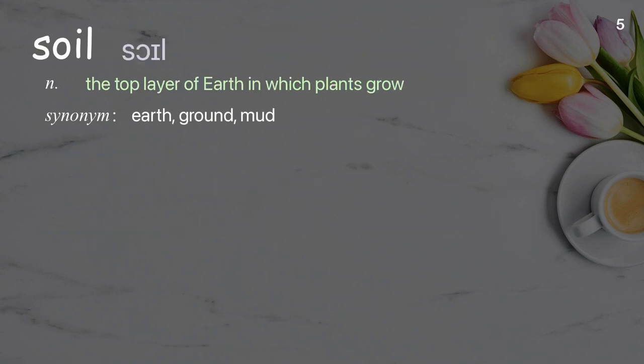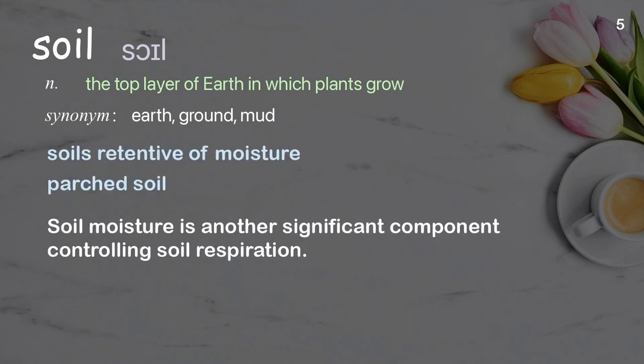Soil: The top layer of earth in which plants grow. Examples: Soils retentive of moisture. Parched soil. Soil moisture is another significant component controlling soil respiration.